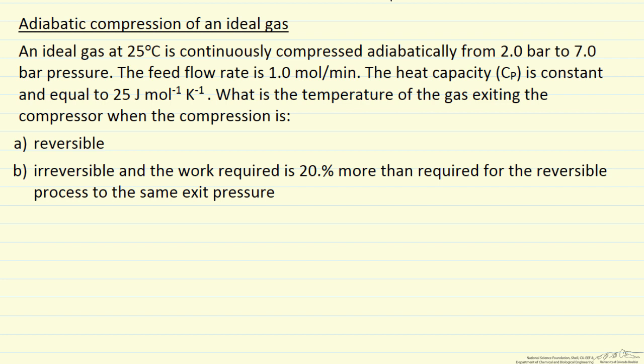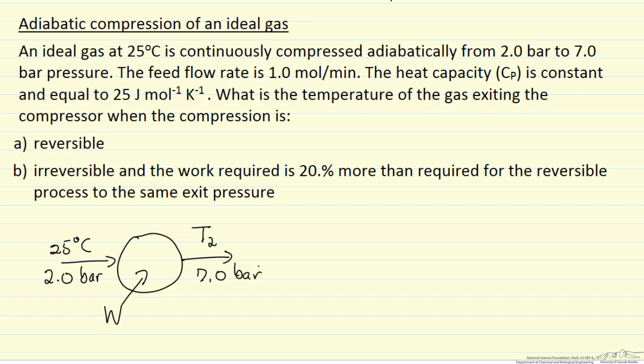Since we are looking at a compressor, I will use that to represent a compressor where we are adding work. Our inlet gas is 25 degrees C and 2 bar, outlet gas is at 7 bar, and we are determining what the temperature is, so let's call that T2, our unknown.